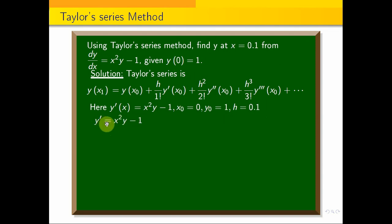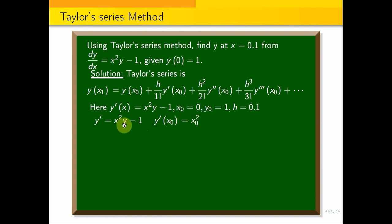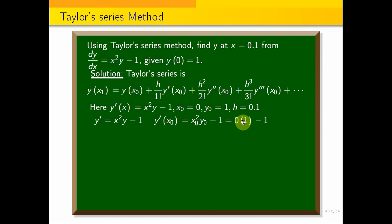Now, y' of x equals x squared y minus 1. So y'(x0) equals x0 squared into y0 minus 1. Since x0 equals 0 and y0 equals 1: that gives 0 times 1 minus 1, which equals minus 1.